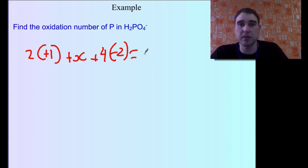This time rather than equaling 0, it's going to equal minus 1. So we've got 2 plus X minus 8 equals minus 1.